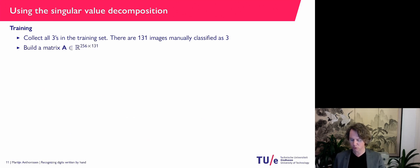So I'm going to build a matrix A with 131 columns, all the 3 images. And every column has length 256 because it's basically an image of 16 by 16 pixels.